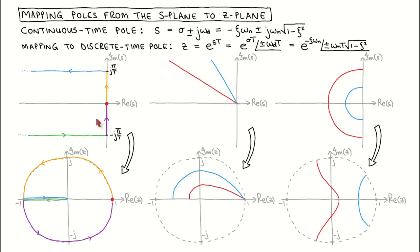If we now keep the imaginary part of the pole at j*pi/T but decrease the real part from zero to minus infinity, we move along this line in the s-plane. When mapped to the z-plane, we see that the angle stays at pi but the magnitude decreases from one to zero, which means we move along the real axis from minus one to zero. For similar ranges of pole locations on the bottom half of the s-plane, the discrete time poles are mapped similarly on the z-plane.